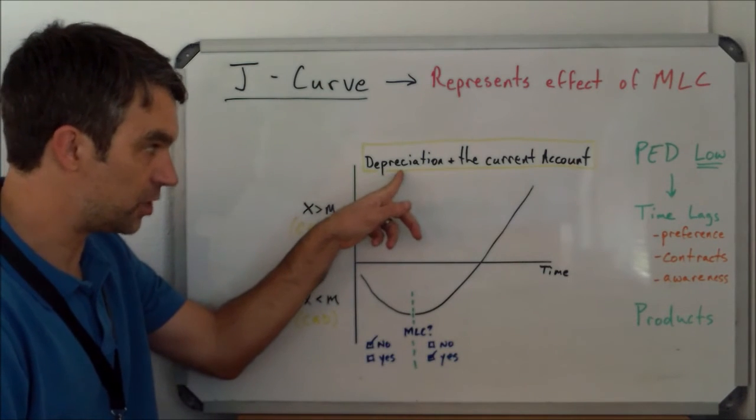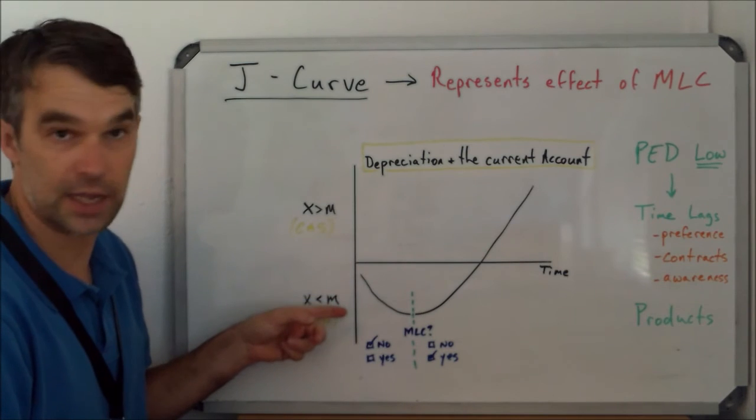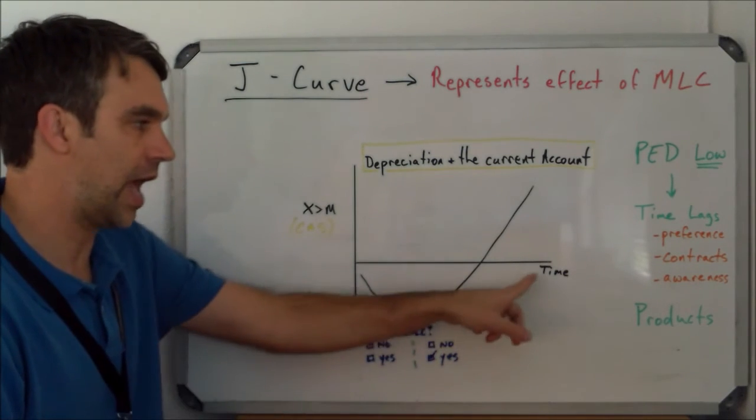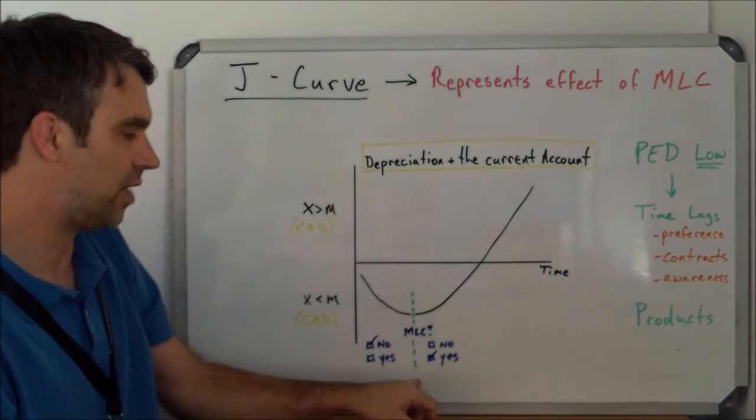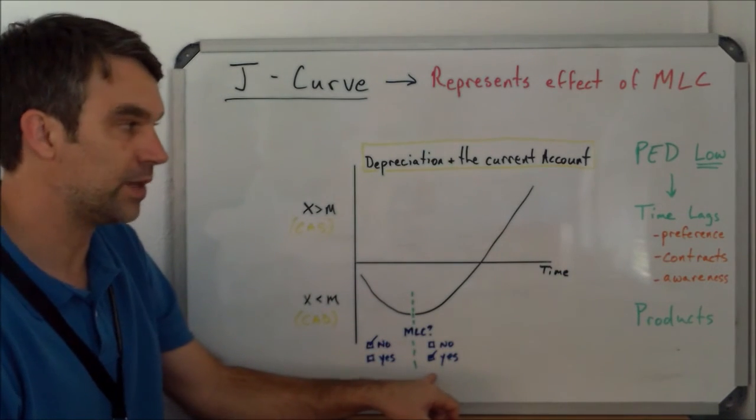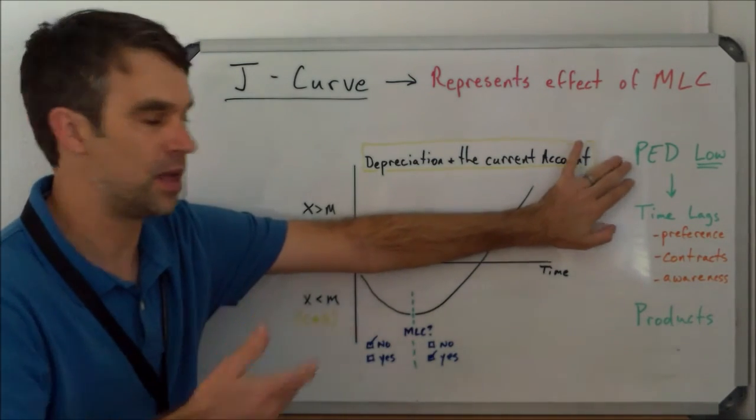Therefore, what we see is the depreciation causes the current account to go further and further into deficit. However, after a certain amount of time, because the time lags will eventually go away, you'll find the Marshall-Learner Condition will be satisfied as PED increases over time.